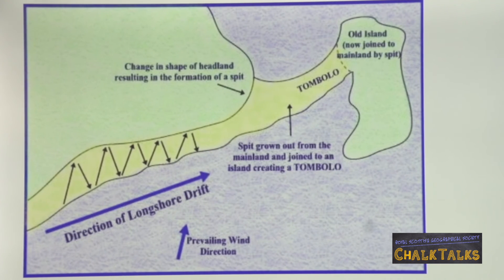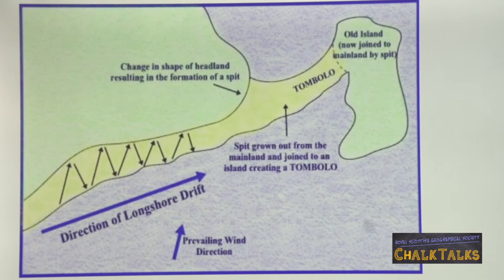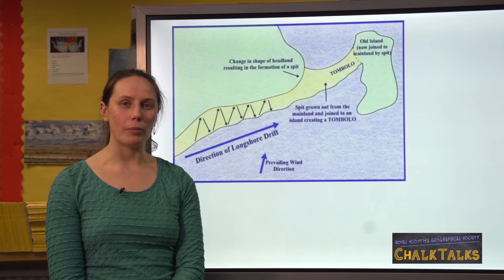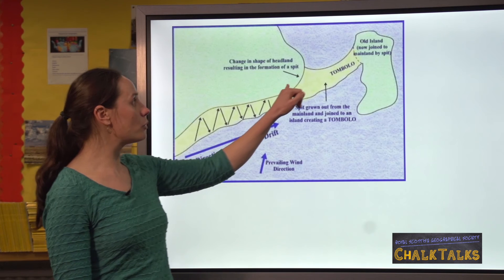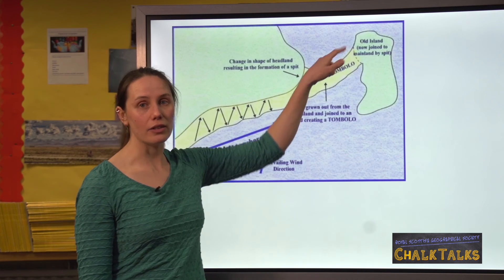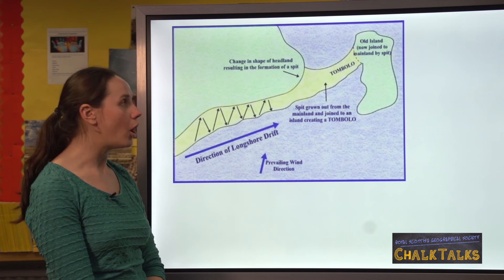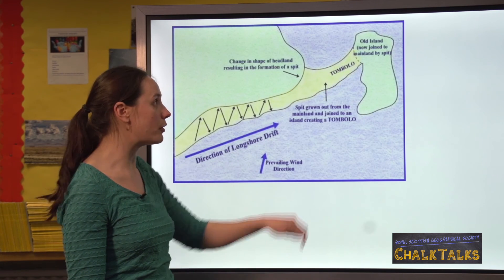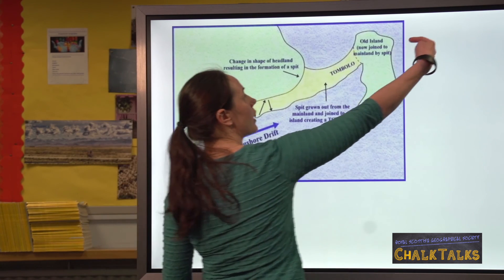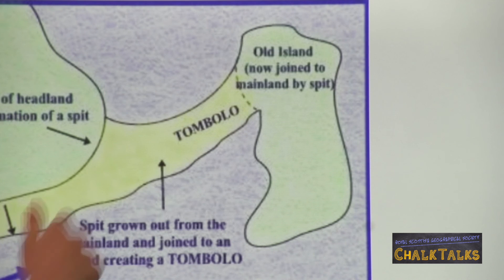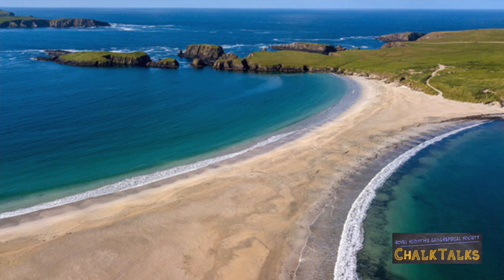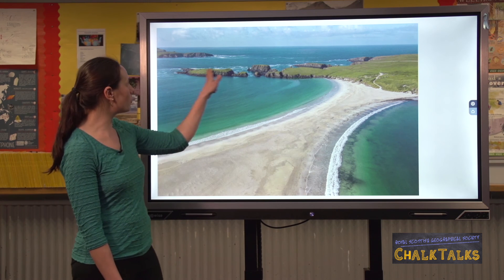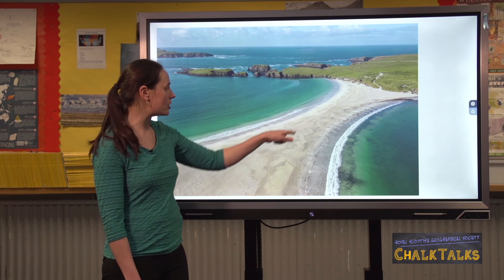The final feature of coastal deposition you may be asked to explain is a tombolo. A tombolo forms in the same way as a spit — if a spit grows out from the land and there's an island in the way, it can attach and become a tombolo. Alternatively, it could form because the island shelters a piece of water from the prevailing wind, leading to deposition. This is a lovely example of a tombolo from St Ninian's Isle in Shetland — the area is well sheltered from the prevailing wind, allowing deposition to take place.